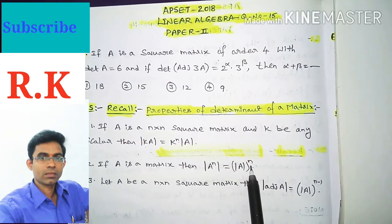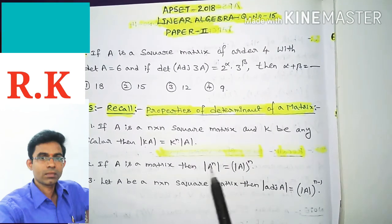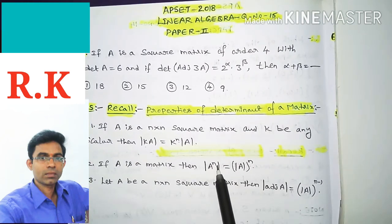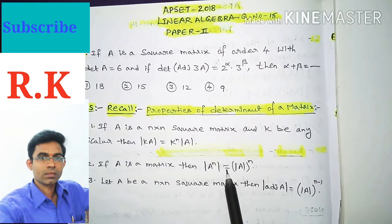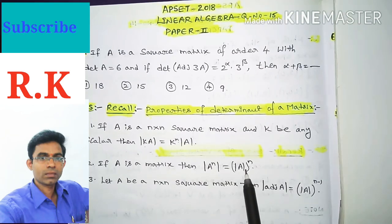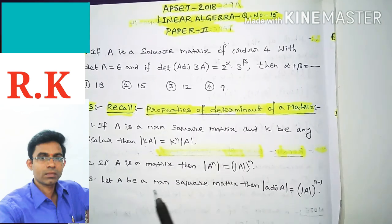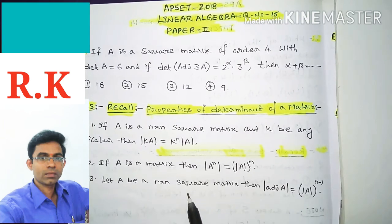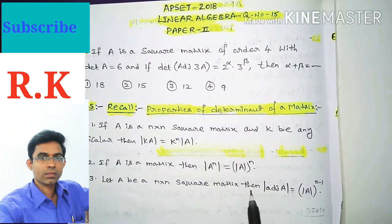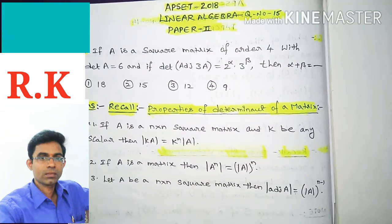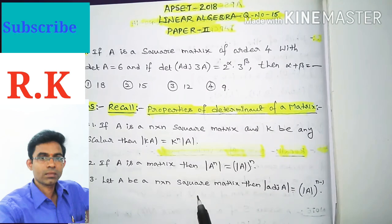The second property: if A is a matrix, then det(A^n) equals det(A) whole to the power n, where n is some positive integer. The third property: if A is an n×n square matrix, then det(adj(A)) equals det(A) whole to the power n minus 1, where n is the order of the given matrix.